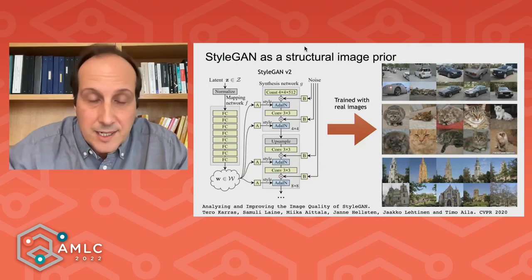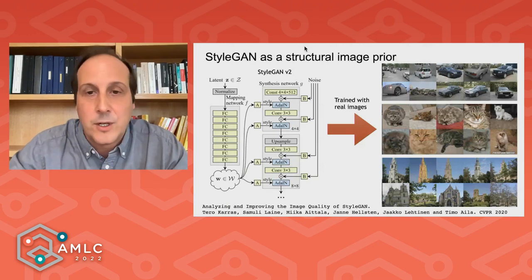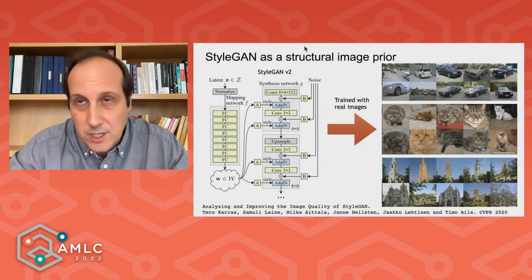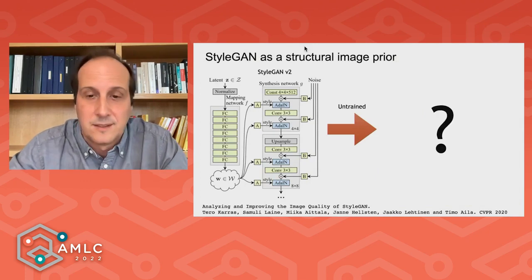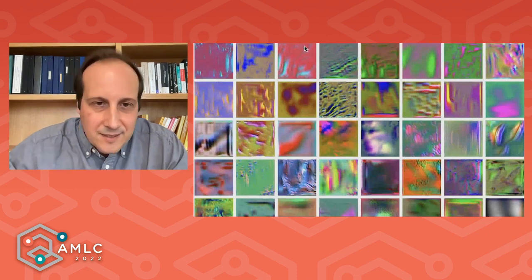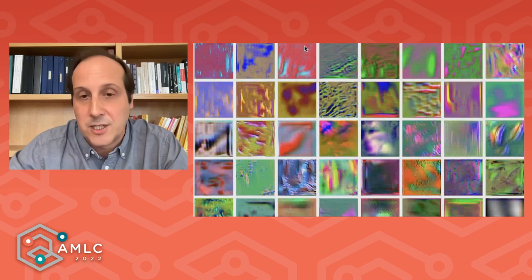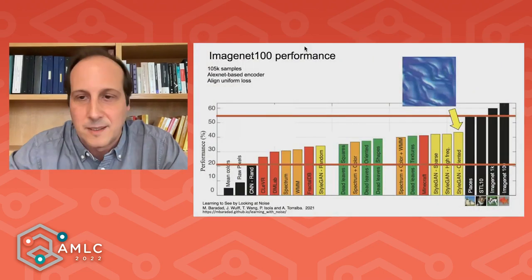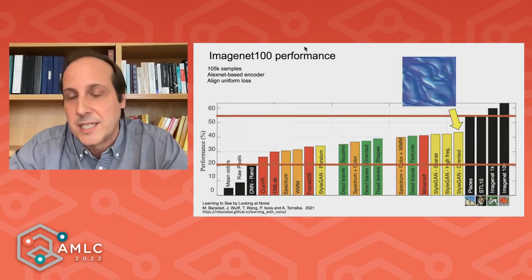We generate different weights that we know match statistics of natural images, using similar criteria to those described before. So what happens if you sample from an untrained GAN? These are the images you get — they look a little bit like the images I was showing before, but with a little bit more structure. In fact, you can see some 3D-ness appearing into them — they look like 3D textures. And if you use these images to train the system, it's when you do the best: the performances are actually quite close, much better than Minecraft, significantly closing the gap with real images.